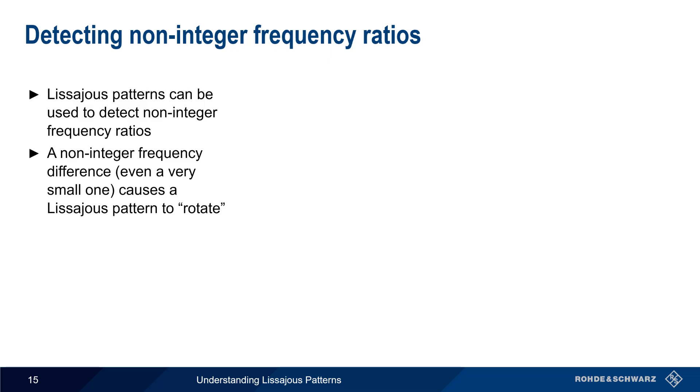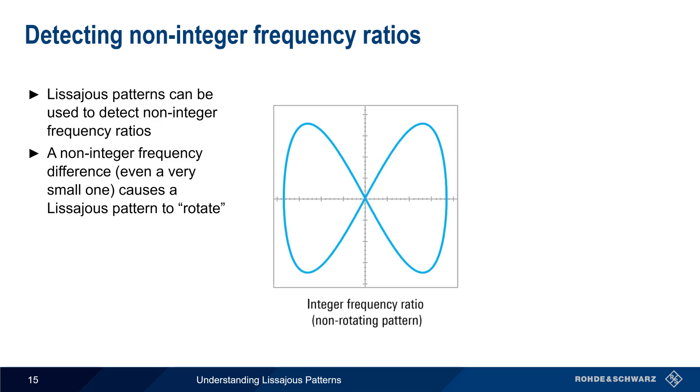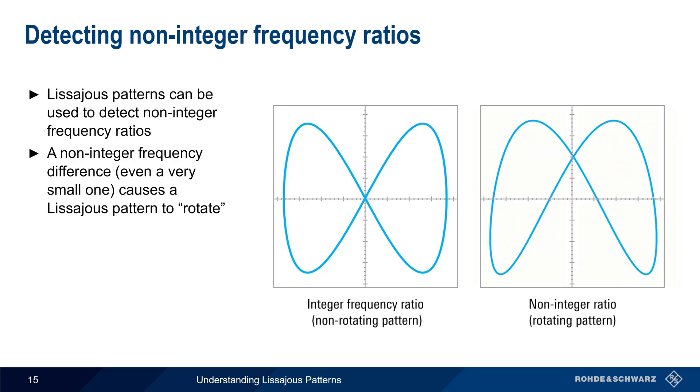For example, if the frequency relationship between two signals is fixed, the pattern will also be fixed or non-rotating. Whereas a non-fixed relationship creates a rotating or moving Lissajous pattern, with the amount and speed of this rotation being a function of the non-integer difference in frequency between the X and Y signals used to create the pattern.